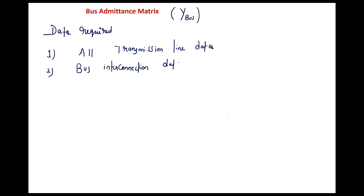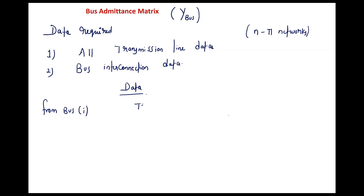All transmission lines in load flow analysis are modeled as nominal pi networks. The data is usually given in this format: from bus (i) and to bus (j), with the resistance Rij, the series reactance Xij between bus i and bus j, and y'ij/2, which is the shunt admittance connected at the bus.